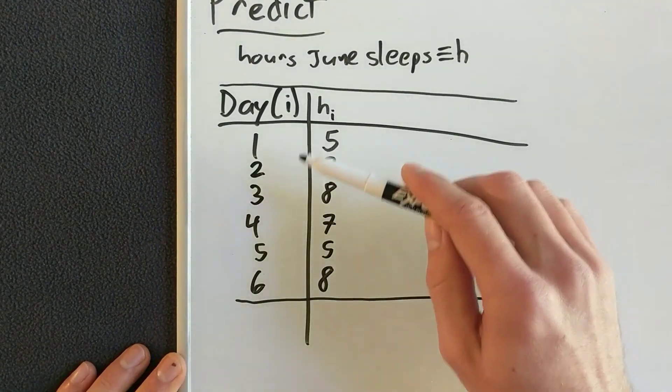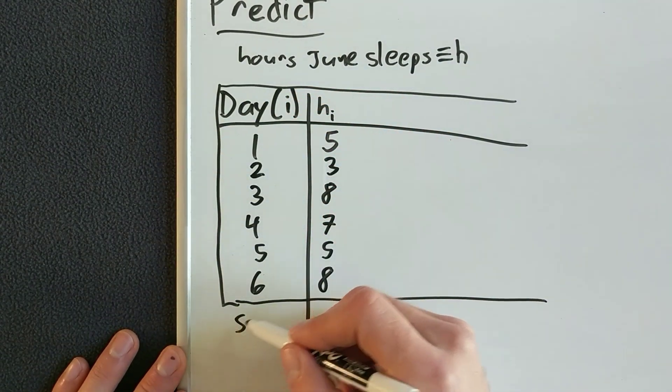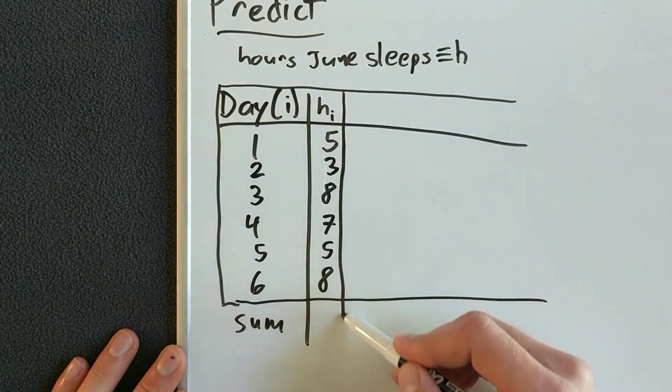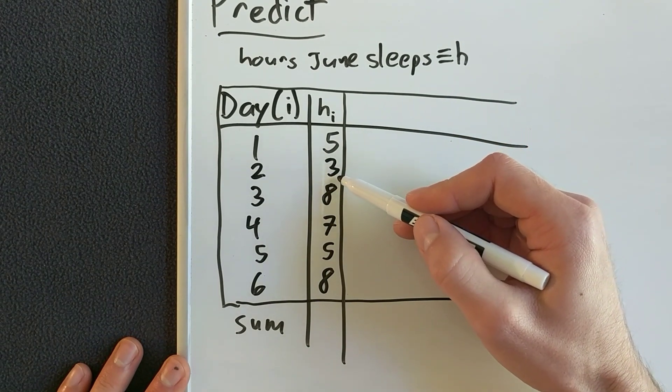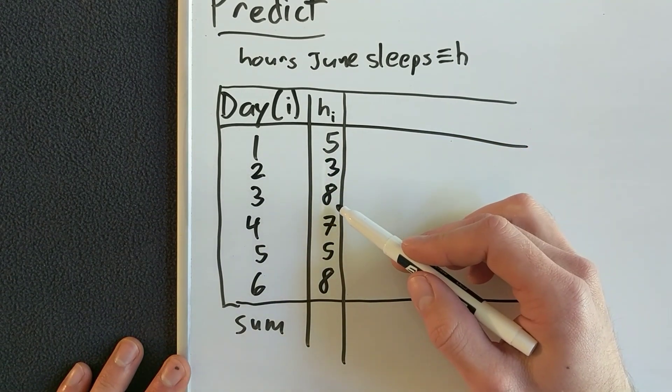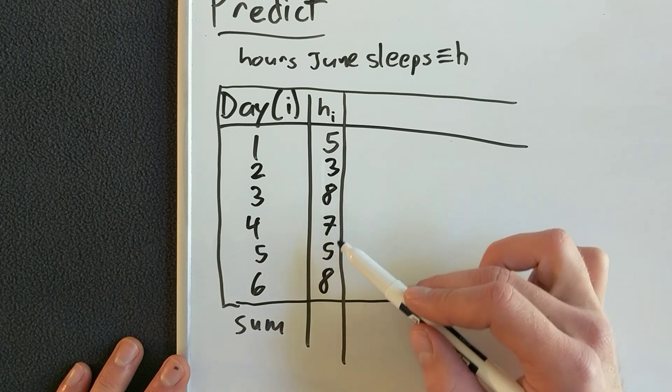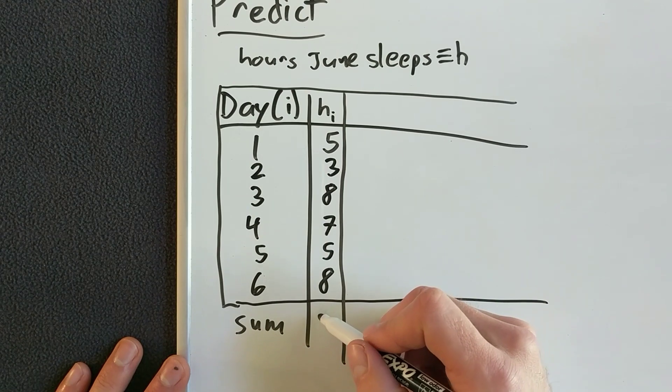Average is always a good place to start. So to find the average of H, let's first find the sum. So we can do this in our heads here. So five plus three is eight, plus eight is sixteen, plus seven would be twenty-three, plus five is twenty-eight, plus eight is thirty-six. Okay, thirty-six.